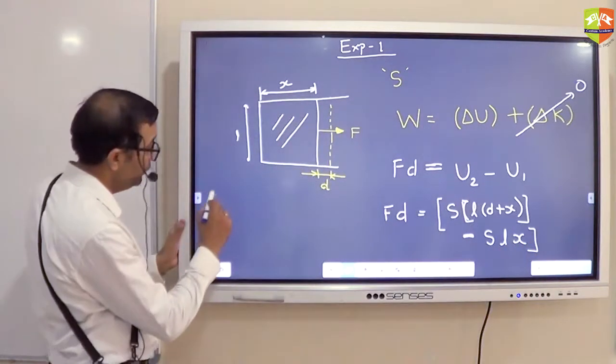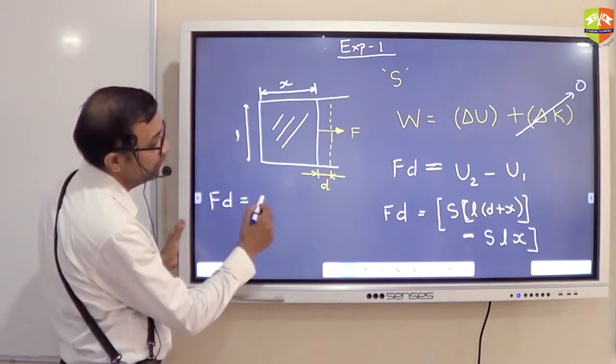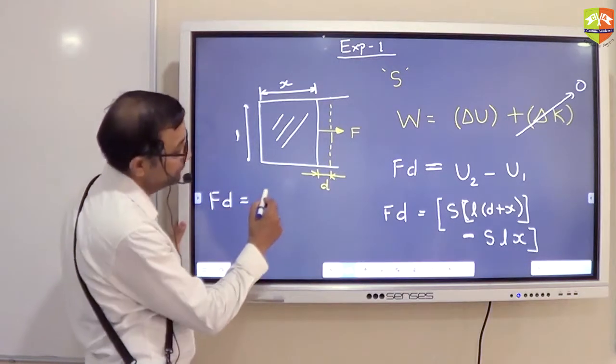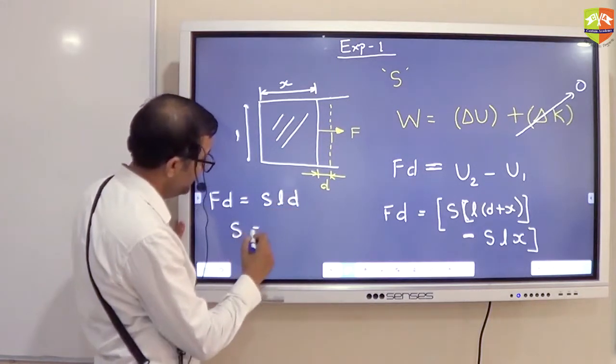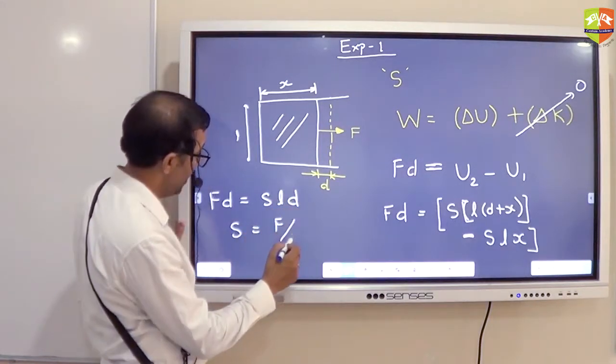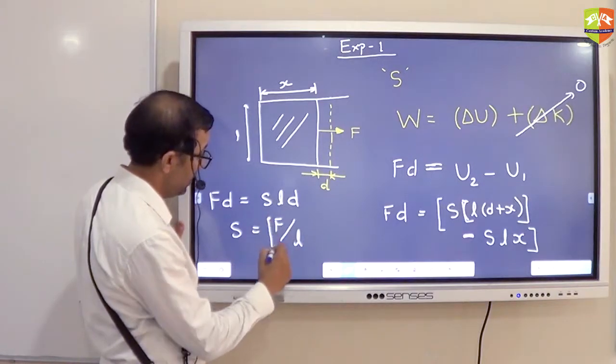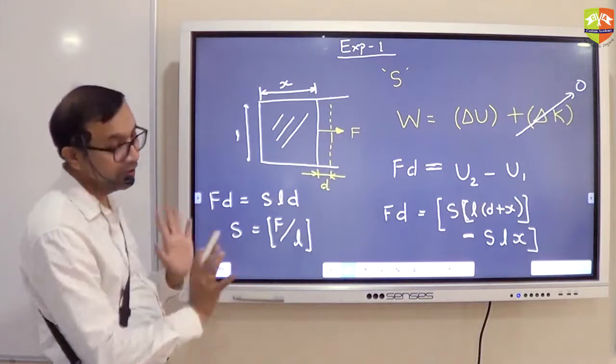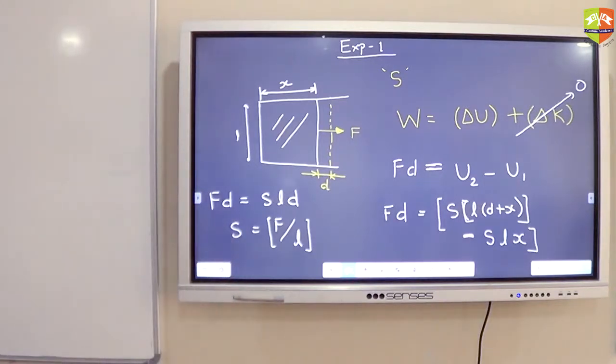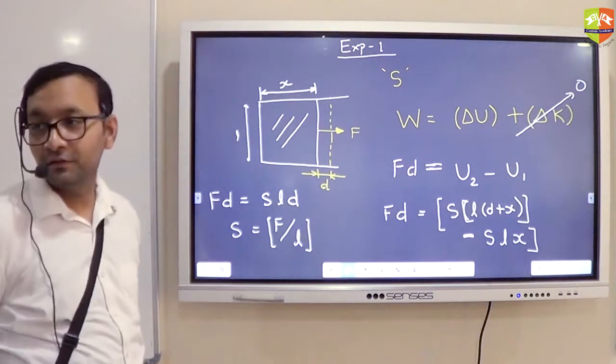So F into D is equal to S L into D. So S is equal to F by L. Now tell me what is wrong here. Something is wrong. There is no calculation error, some concept is wrong.